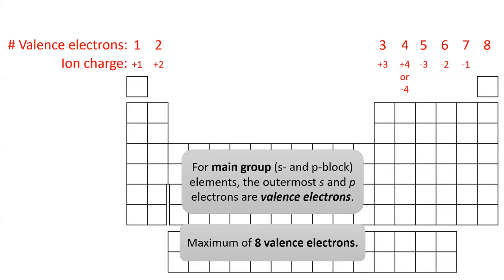Elements in columns 5 through 7 gain enough electrons to have 8 valence electrons, giving these ions a negative charge. And the noble gases are already happy with 8 valence electrons, so they don't form ions or react at all.